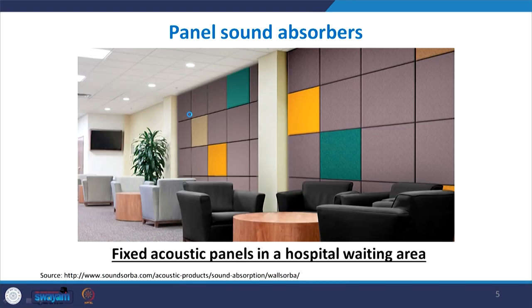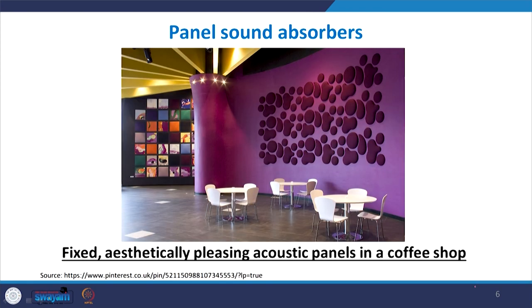Here is an example of fixed acoustic panels in a hospital waiting area — the different colored blocks that look like tiles are actually acoustic panels fixed to the walls. In a coffee area, boards that appear to be wall decoration are actually acoustic panels whose main purpose is to reduce noise, though to a viewer they look like aesthetic elements.